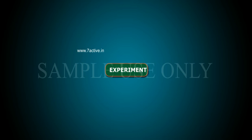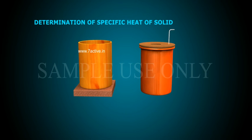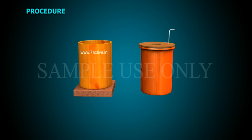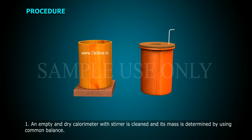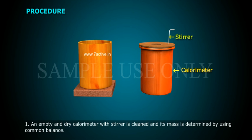Experiment: Determination of specific heat of solid. Procedure: An empty and dry calorimeter with stirrer is cleaned and its mass is determined by using a common balance.